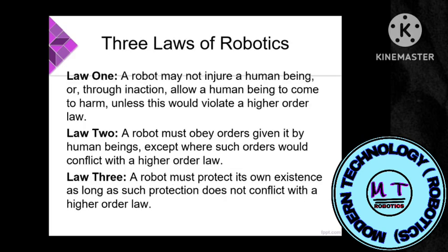Before going into robotics, there are three laws of robotics which define what a robot can and cannot do. Law One: a robot may not injure a human being, or through inaction allow a human being to come to harm, unless this would violate a higher-order law.